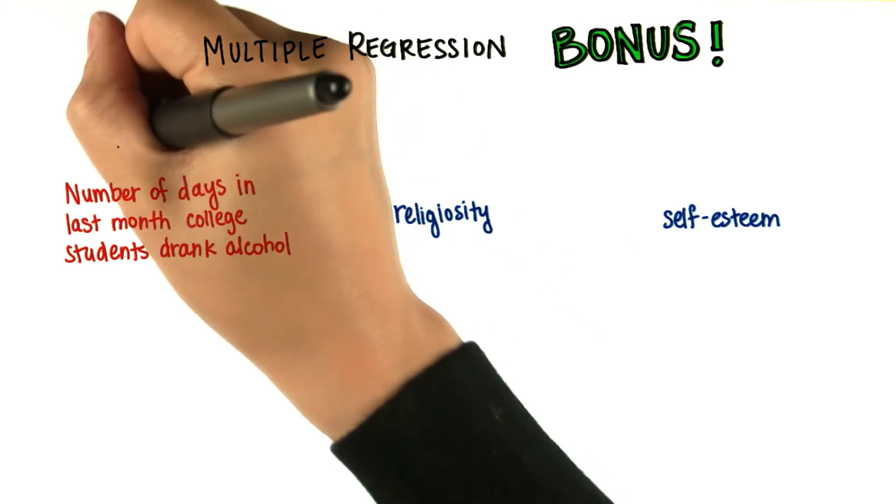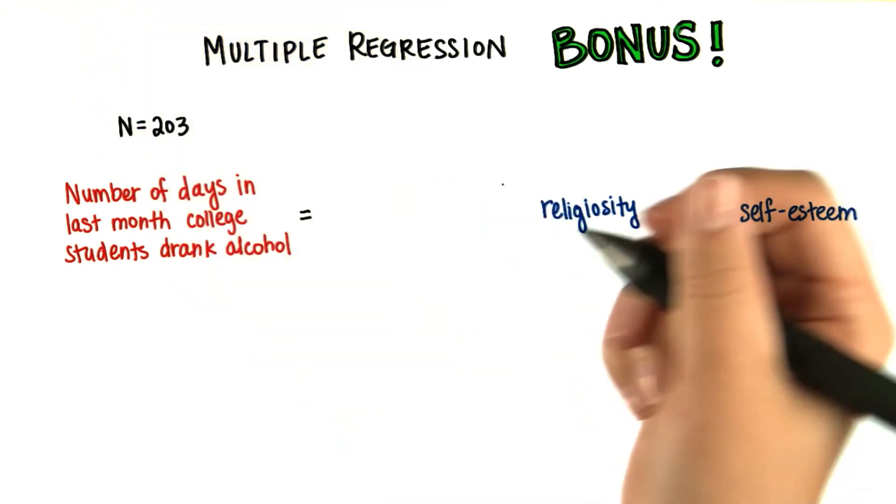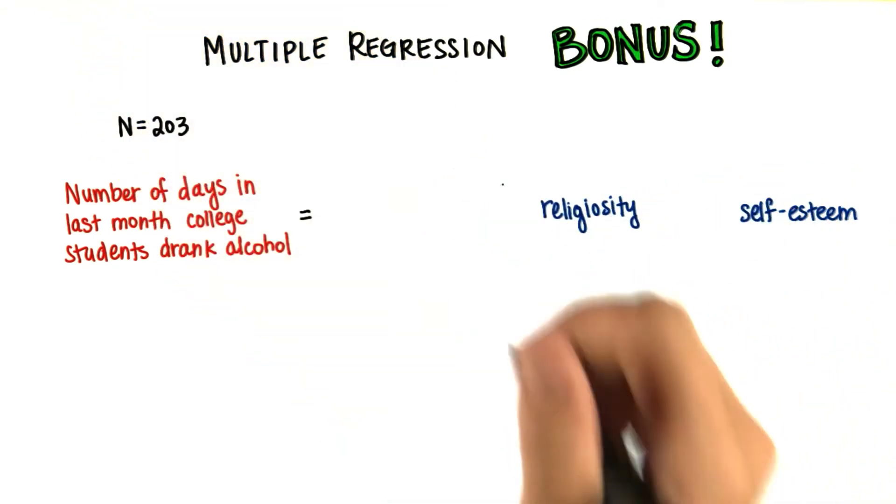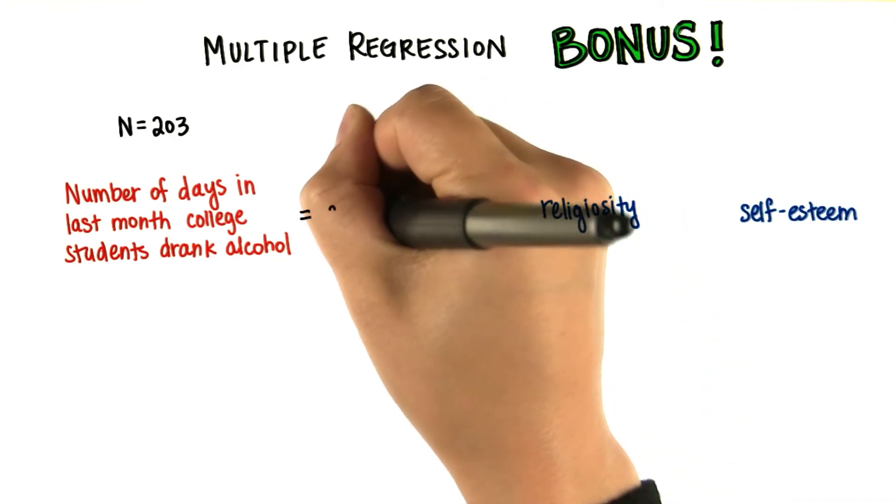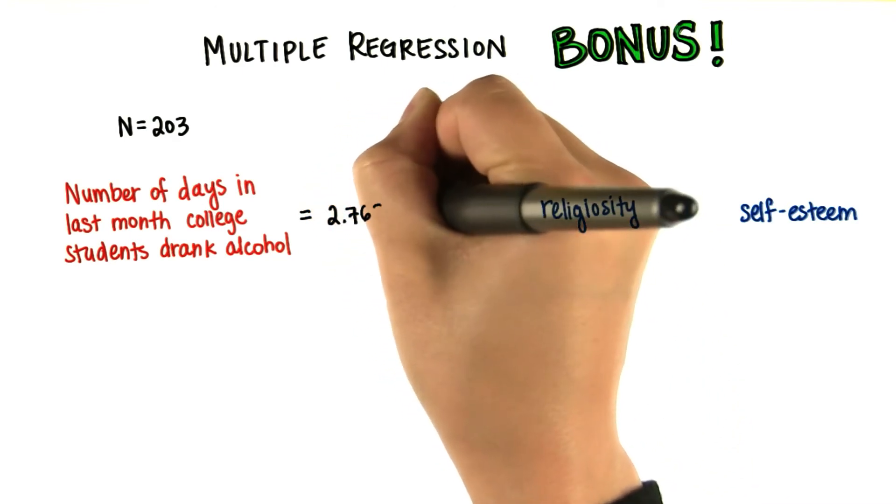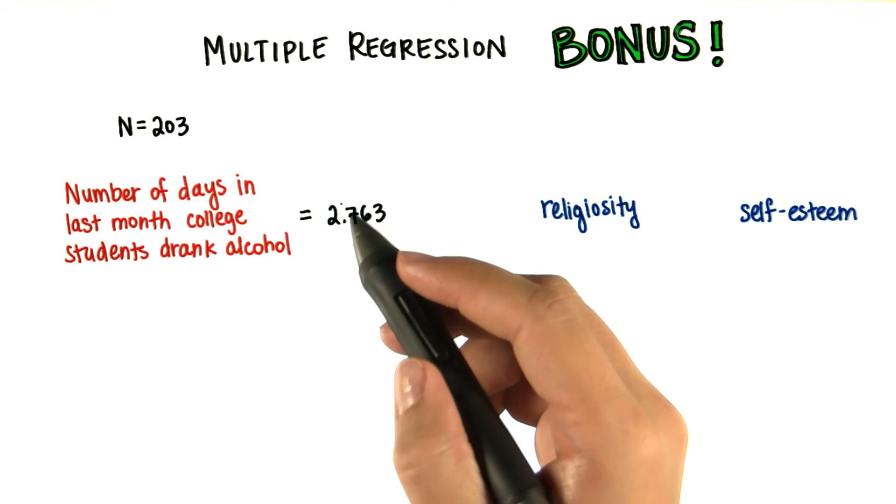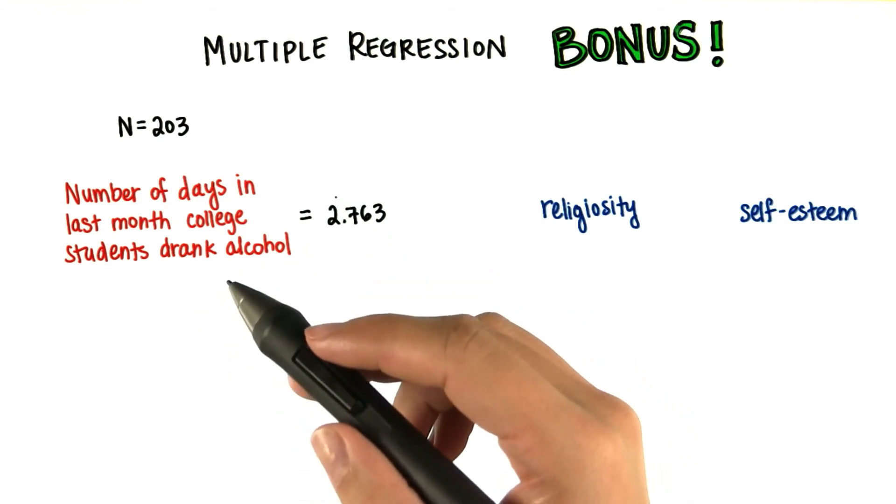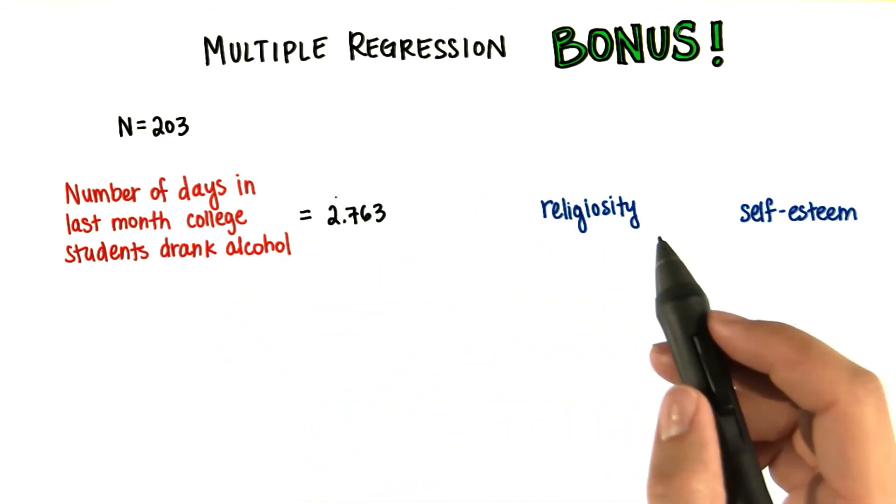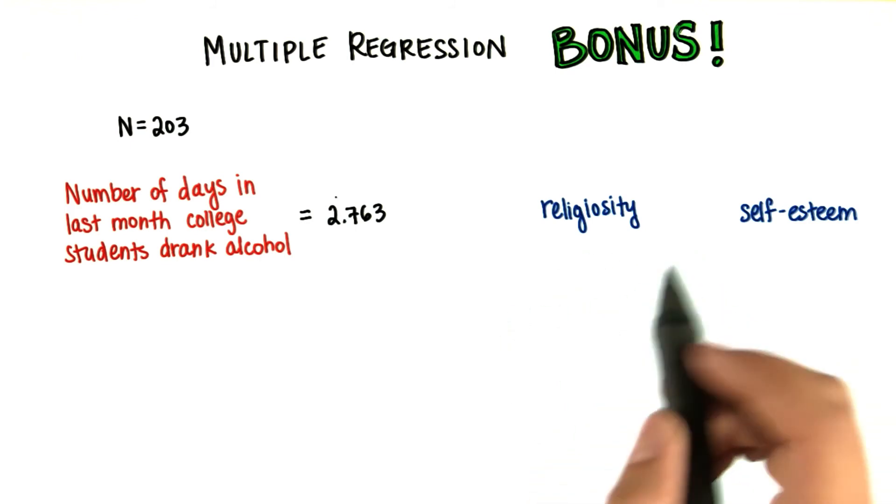His sample included 203 participants. When Dr. Larraway did the regression, he got that the y-intercept was 2.763. This tells us the predicted number of days that the participants used alcohol in the last month when their self-esteem and religiosity were both zero.